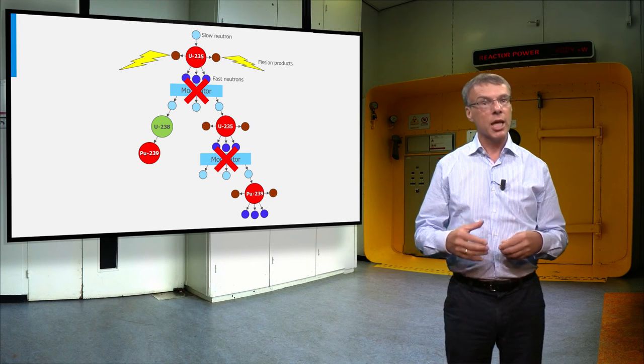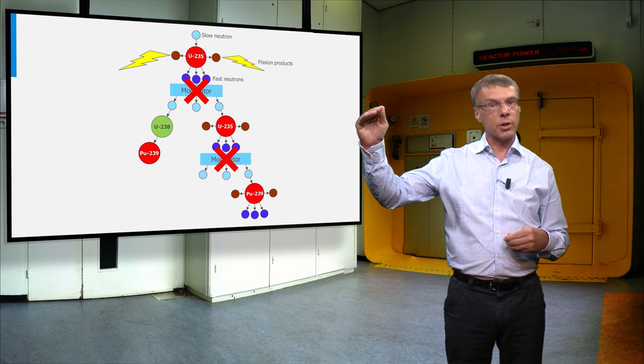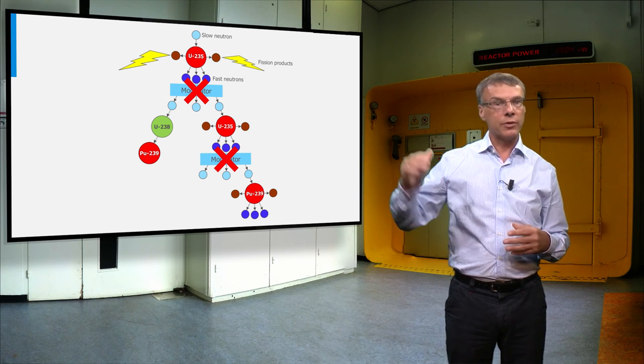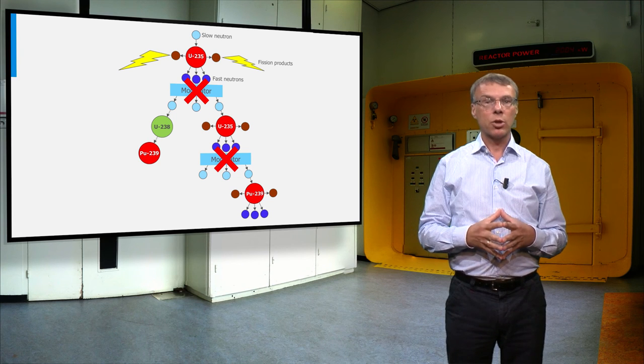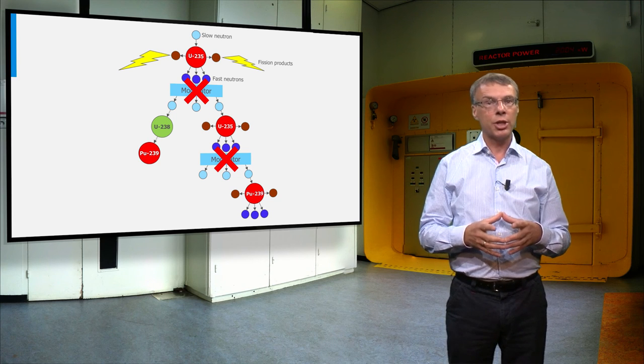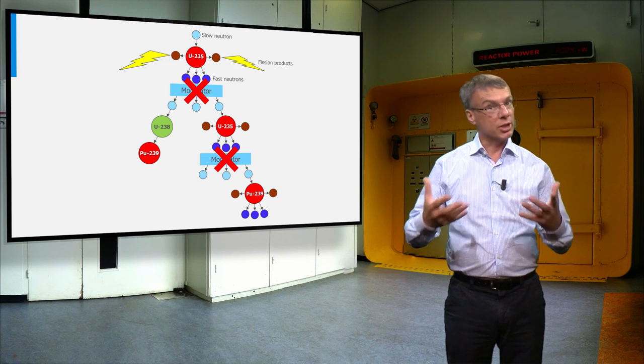We compensate this by increasing the fuel enrichment from 5 to about 15 to 20 percent in a fast reactor. In this way we can compensate for the lack of moderation and the fission chain reaction is still possible.